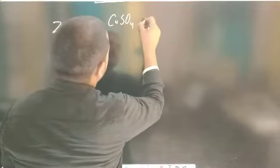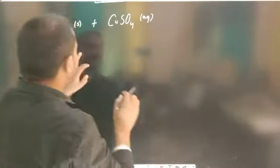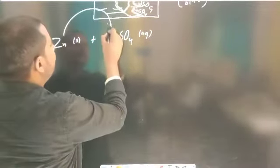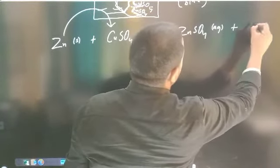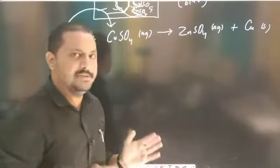We can see the next example. When zinc granules — zinc metal ke jo tukde hain — are poured into the blue solution of copper sulfate, to yahan bhi displacement reaction hoga. Zinc jo hai woh copper ko displace kar dega, so zinc sulfate solution banega, aur copper jo hai woh displace ho jaayega. Ye bhi displacement reaction hai.